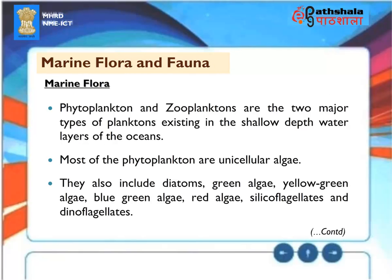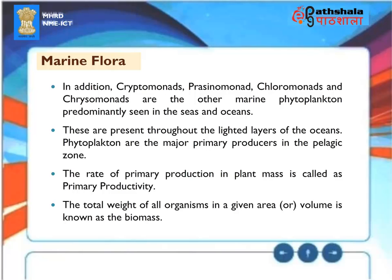Marine Flora: Phytoplanktons and zooplanktons are the two major types of planktons existing in the shallow depth water layers of the oceans. Most of the phytoplanktons are unicellular algae. They also include diatoms, green algae, yellow-green algae, blue-green algae, red algae, silicoflagellates and dinoflagellates. In addition, cryptomonads, prasinomonads, chloromonads and chrysomonads are the other marine phytoplanktons predominantly seen in the seas and oceans.